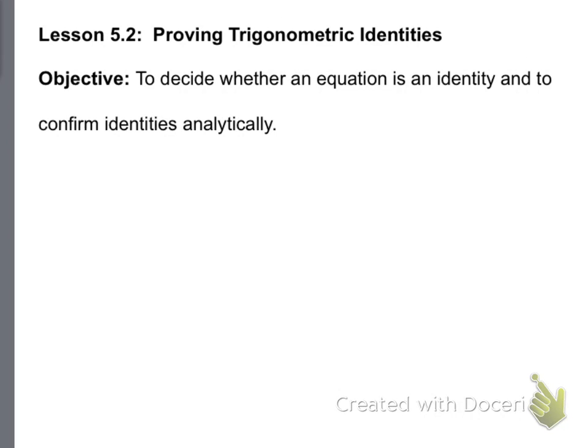This is the next section in chapter 5, section 5.2. In this section we're going to be talking about proving trigonometric identities. We need to decide whether an equation is an identity, and to confirm the identities analytically.